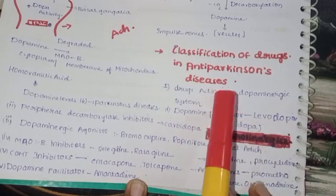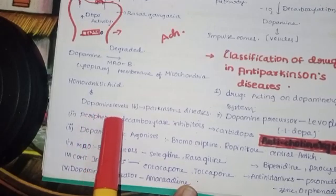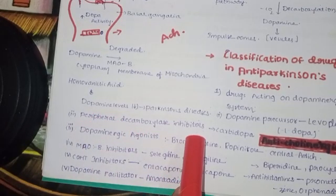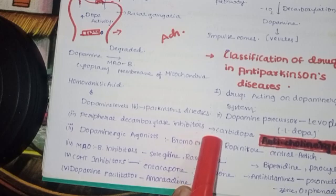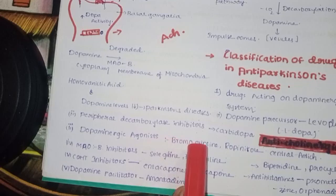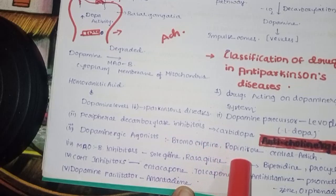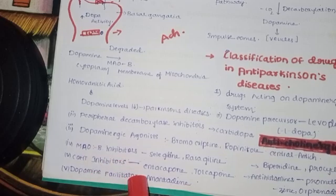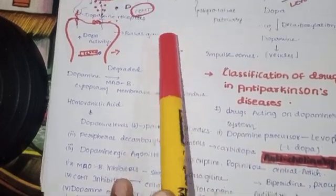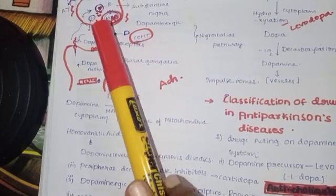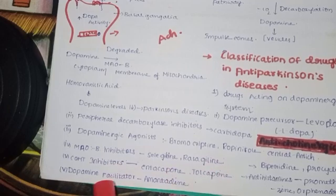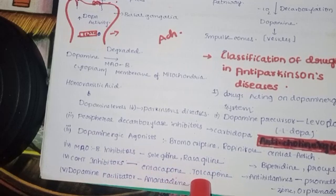Dopamine precursor: levodopa (L-dopa). Peripheral decarboxylase inhibitors, for example, carbidopa. Dopamine agonists: bromocriptine, ropinirole. MAOB inhibitors — examples are selegiline and rasagiline. COMT inhibitors: entacapone, tolcapone. Dopamine facilitator: amantadine — a dopamine synthesis facilitator.